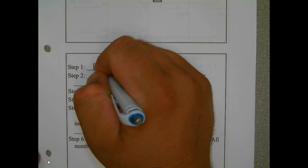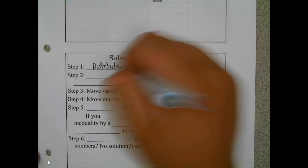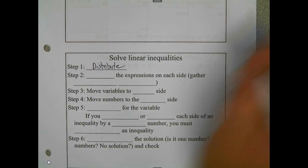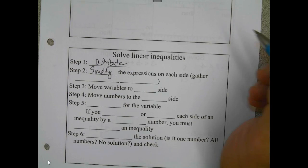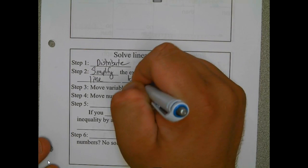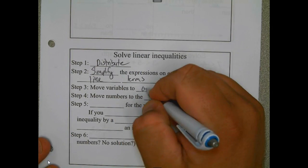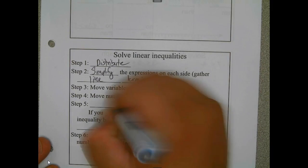Step one is going to be the same: you're going to distribute if needed, you're going to simplify the expressions on each side by gathering like terms, move variables to one side, move the numbers to the other, and solve for the variable.